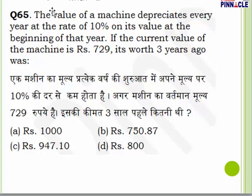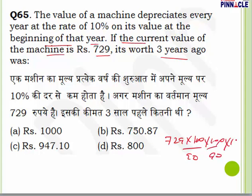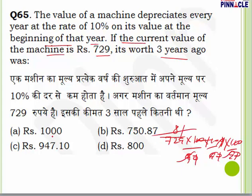Question number 65: a machinery depreciates every year at the rate of 10% on its value at the beginning of that year. If the current value is 729, find its worth three years before. Since value decreased, we go backwards: multiply by 100/90 three times. 729×(100/90)³ = 729×(10/9)³ = 729×1000/729 = 1000. Answer is 1000.